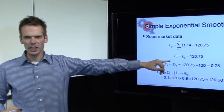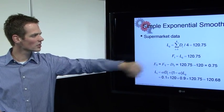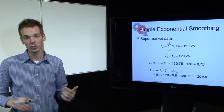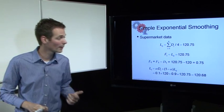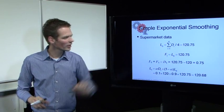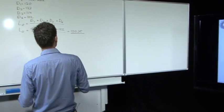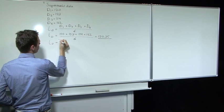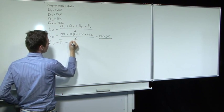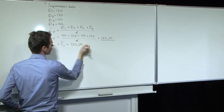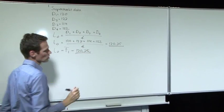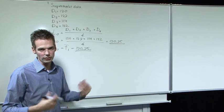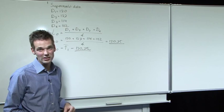The second formula tells us that forecast 1 equals level 0. We have calculated level 0, so since level 0 equals forecast 1, the forecast for period 1 is 120.75.